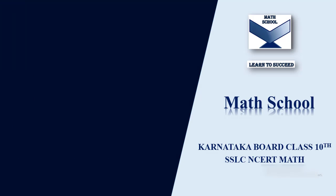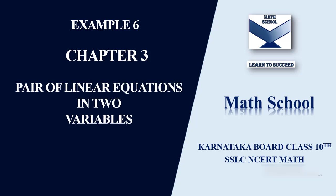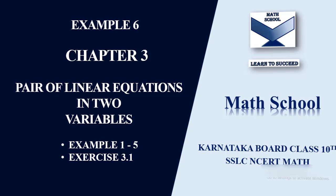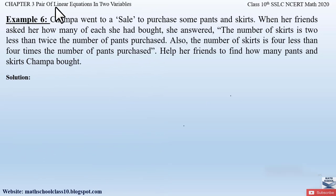Welcome back to my channel Mad School. In today's video, let us solve Example 6 from Chapter 3, Pair of Linear Equations in Two Variables. In my previous videos I have completed Examples 1 to 5 and Exercise 3.1 from the same chapter. If you have not watched those videos, do find the link in the description box below or click the 'i' button above.